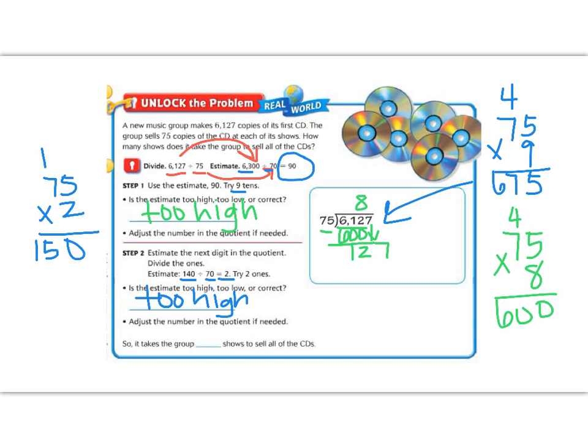But now we know that it's going to be a 1. So we would adjust our quotient. 75 times 1 is 75. And now we can subtract. 7 minus 5 is 2, 12 minus 7 we can't do, so we have to borrow. 12 minus 7 is 5. So we're left over with 52, and 52 is a remainder because it's smaller than our divisor. So we know that's the leftover part.